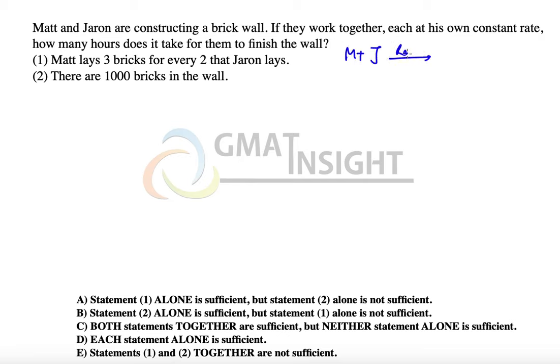Let's check these statements. The first statement says that Matt lays three bricks for every two laid by Jaren. That means Matt is 3/2 as efficient as Jaren, because if Jaren does two, then Matt does three. This is the relationship of their efficiencies.